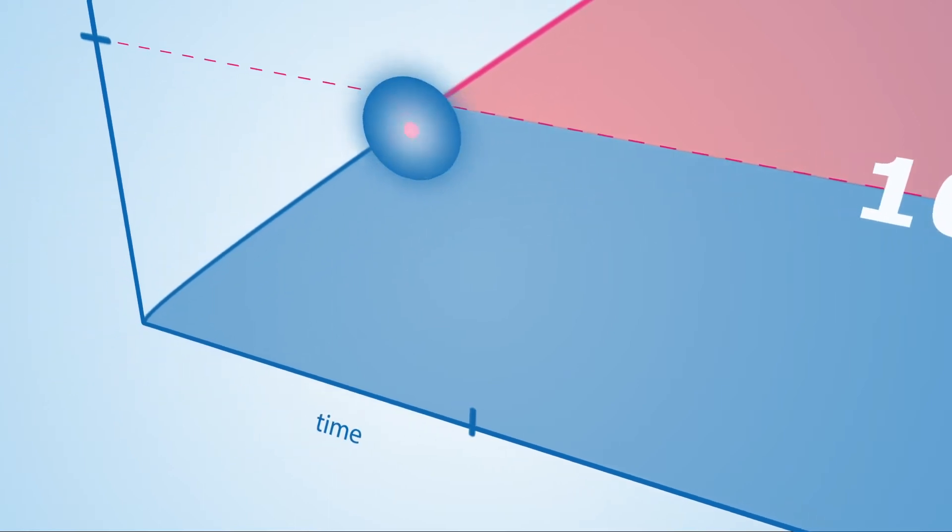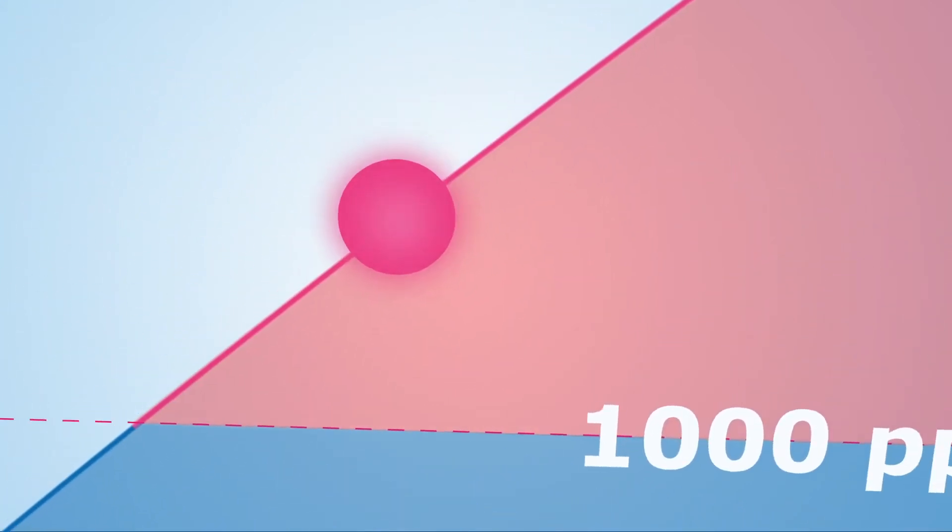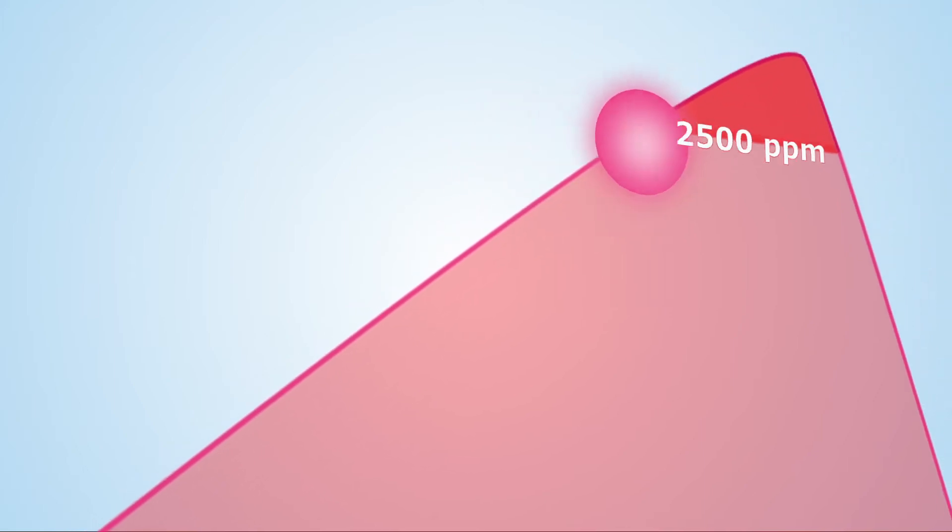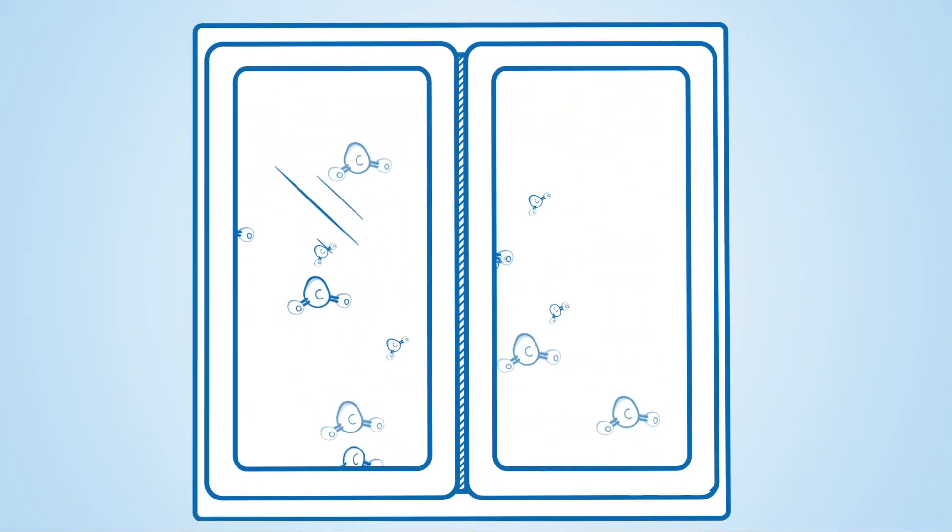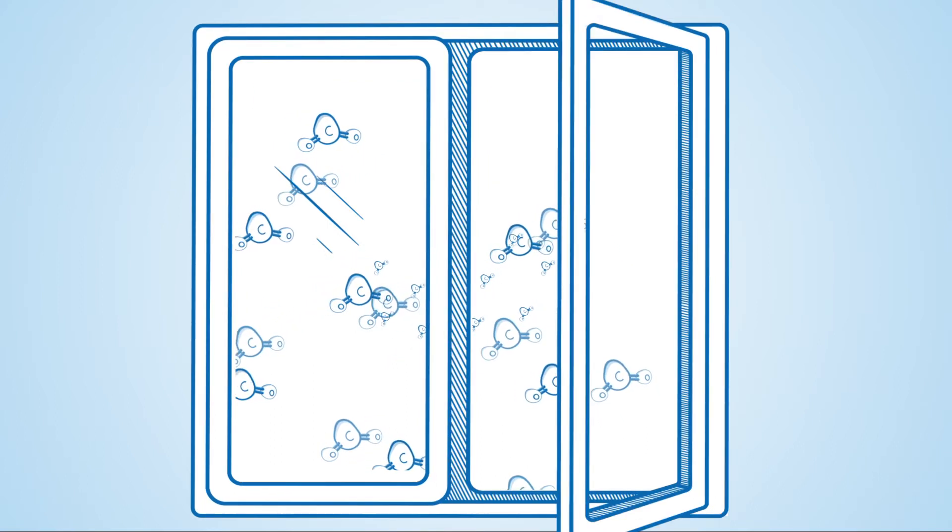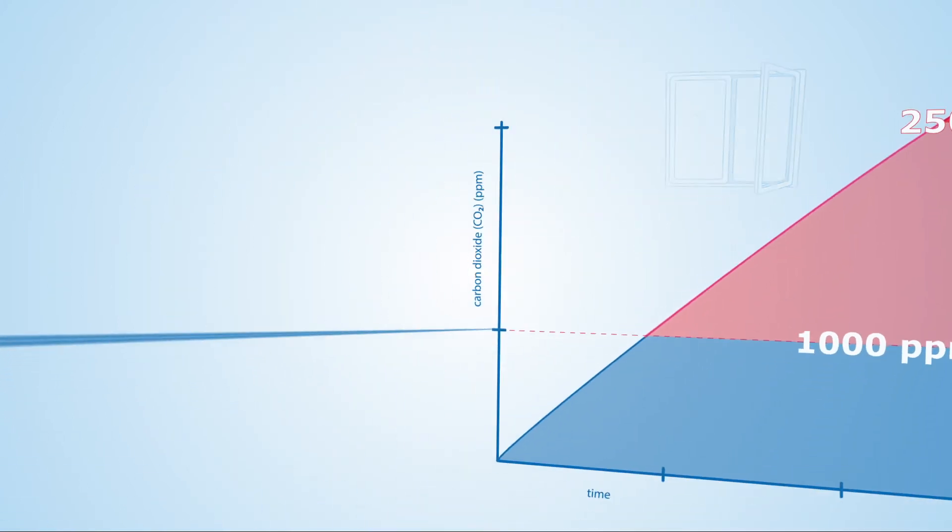When measured at the start of a typical school day, this level of concentration will climb during the day to a peak value of more than 2,500 ppm. The only reasonable approach is to develop a ventilation concept to reduce the concentration of particles in the air.